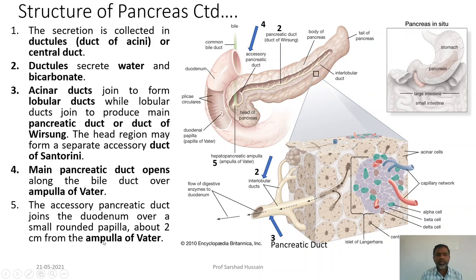In summary: each lobule's alveoli cells secrete enzymes which are poured into the ductules; water and salt are added; the secretion is then supplied to the main pancreatic duct, which opens into the duodenum just above the ampulla of Vater. The accessory pancreatic duct also opens just two centimeters away from the ampulla of Vater.